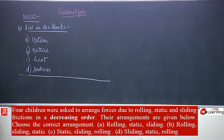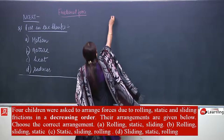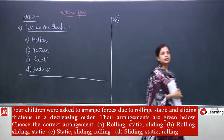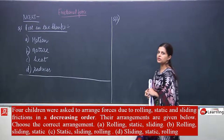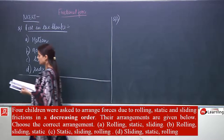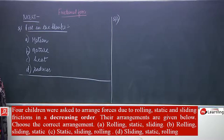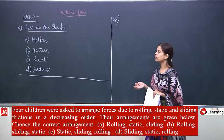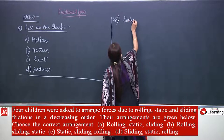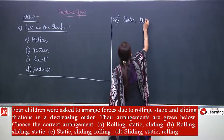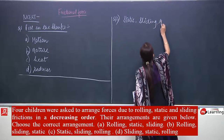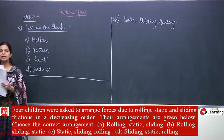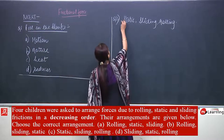We have to arrange the three kinds of friction — static, rolling, and sliding — in decreasing order. The body experiences the greatest friction in static friction, then sliding friction, then rolling friction. So the correct decreasing order is static, sliding, rolling — which is option C.